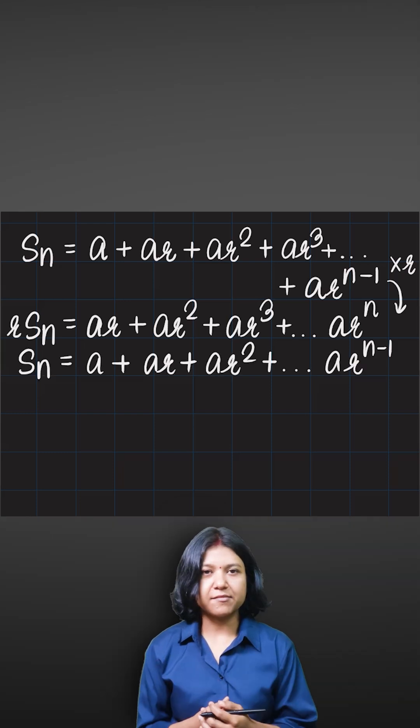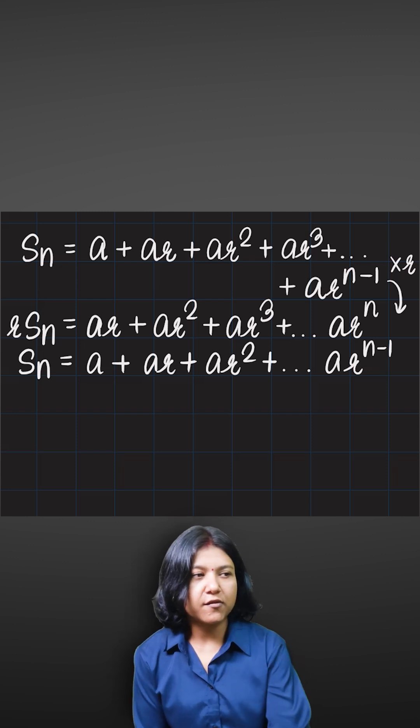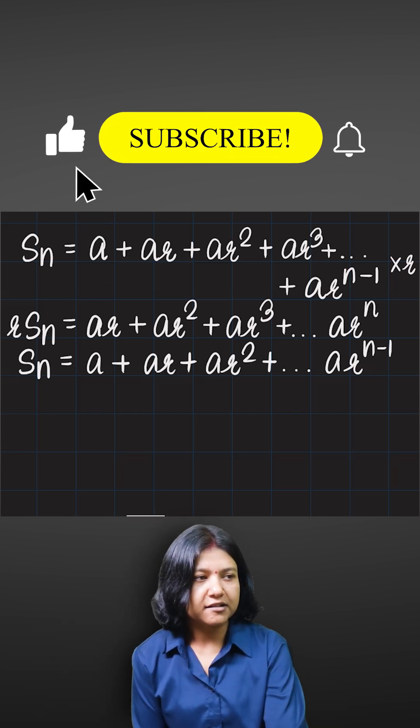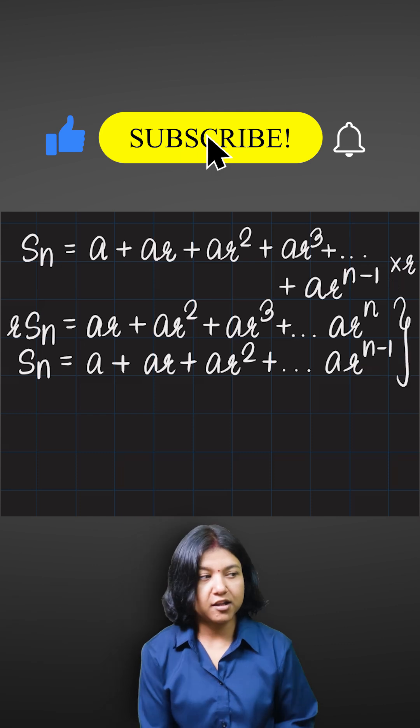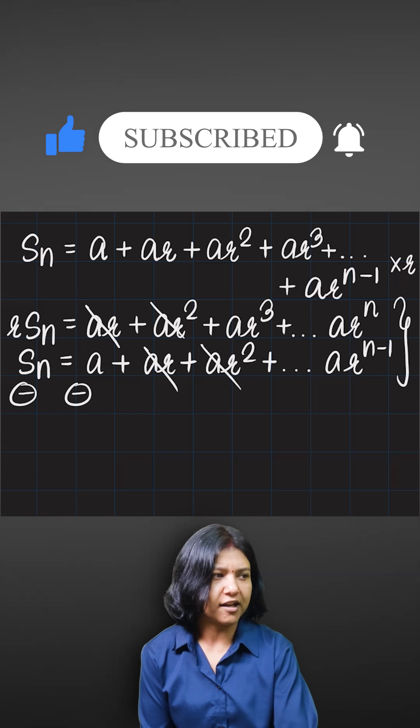I just copied the same series once again from the top. The reason I did it is because I want to subtract the two equations. Why are we subtracting now? If you subtract, then you will be getting rid of the common terms, and you see there are common terms present. ar and ar will cancel out upon subtracting.